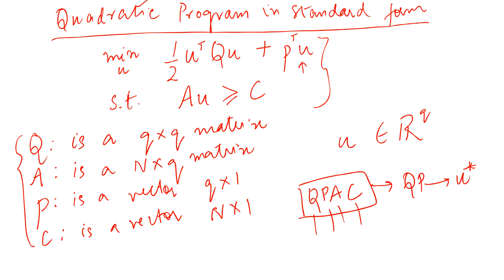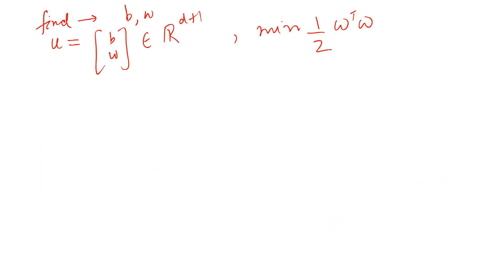So what exactly were we doing in our problem? We were trying to find, we were solving for b and w. And so I'm defining this new term U that is equal to b and w, which is in this R D plus 1 space because of the bias. And if you remember, what we wanted to minimize, this was our objective function, was half of w transpose w.